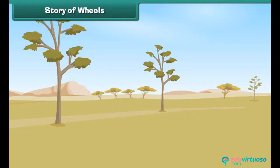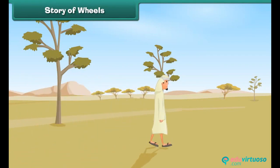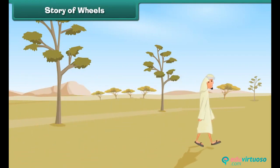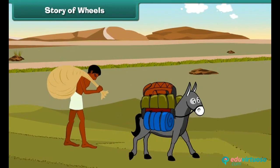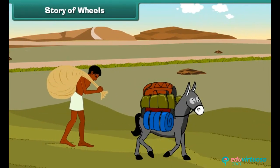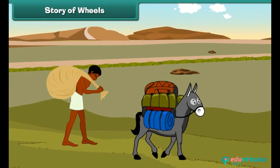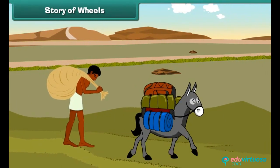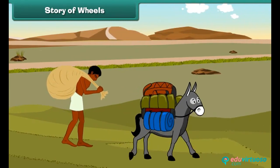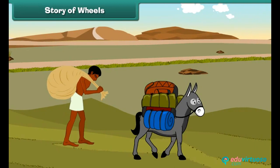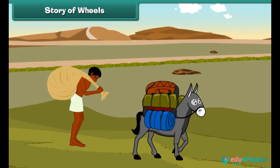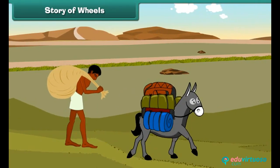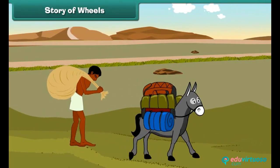Story of Wheels. Long, long ago, there were no means of transport. Man covered distances on foot. He carried his goods on his back or on the backs of domesticated animals like donkeys, buffalos, etc. But he found it difficult to do so over long distances.